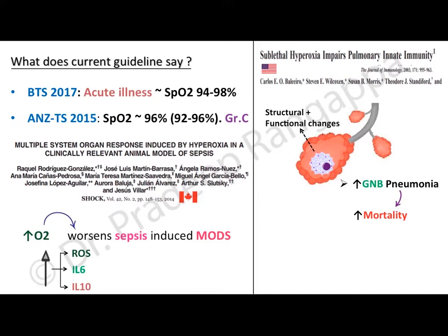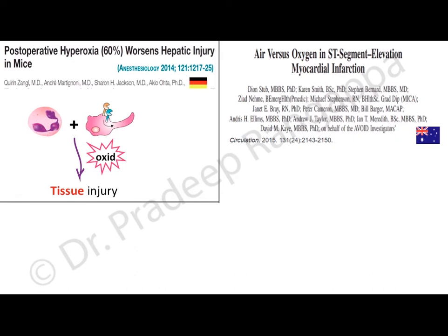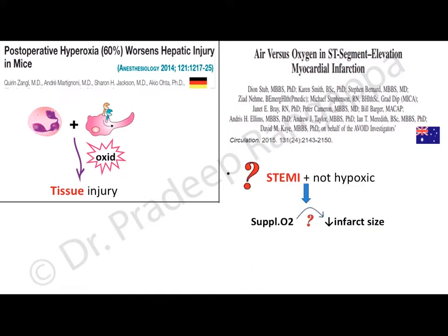Moving to clinical studies: an Australian group study in 2015 compared oxygen versus no oxygen in myocardial infarction — the AVOID study. The question was whether giving supplemental oxygen to patients with ST-elevation MI who are not hypoxic leads to reduced infarct size. This was a multicentric prospective randomized controlled trial done in nine hospitals in Australia between 2011 and 2014.